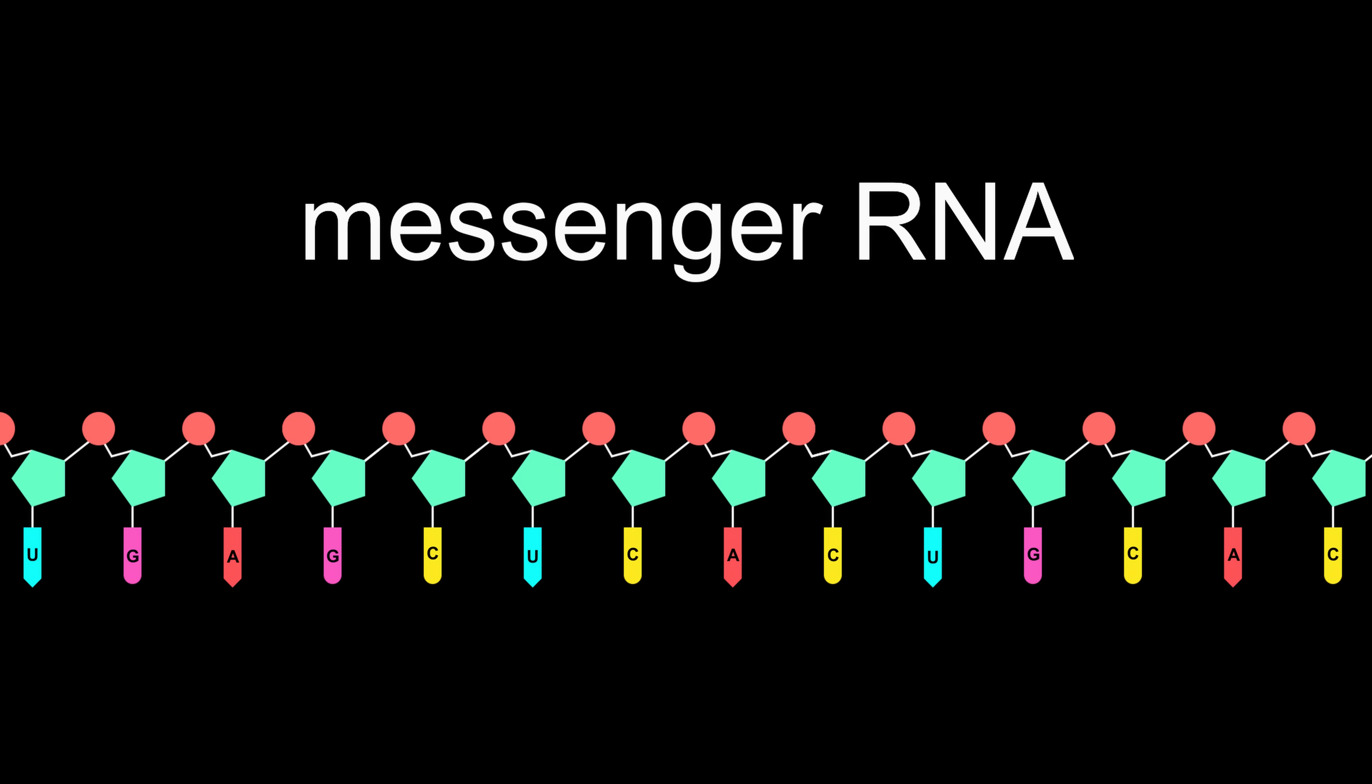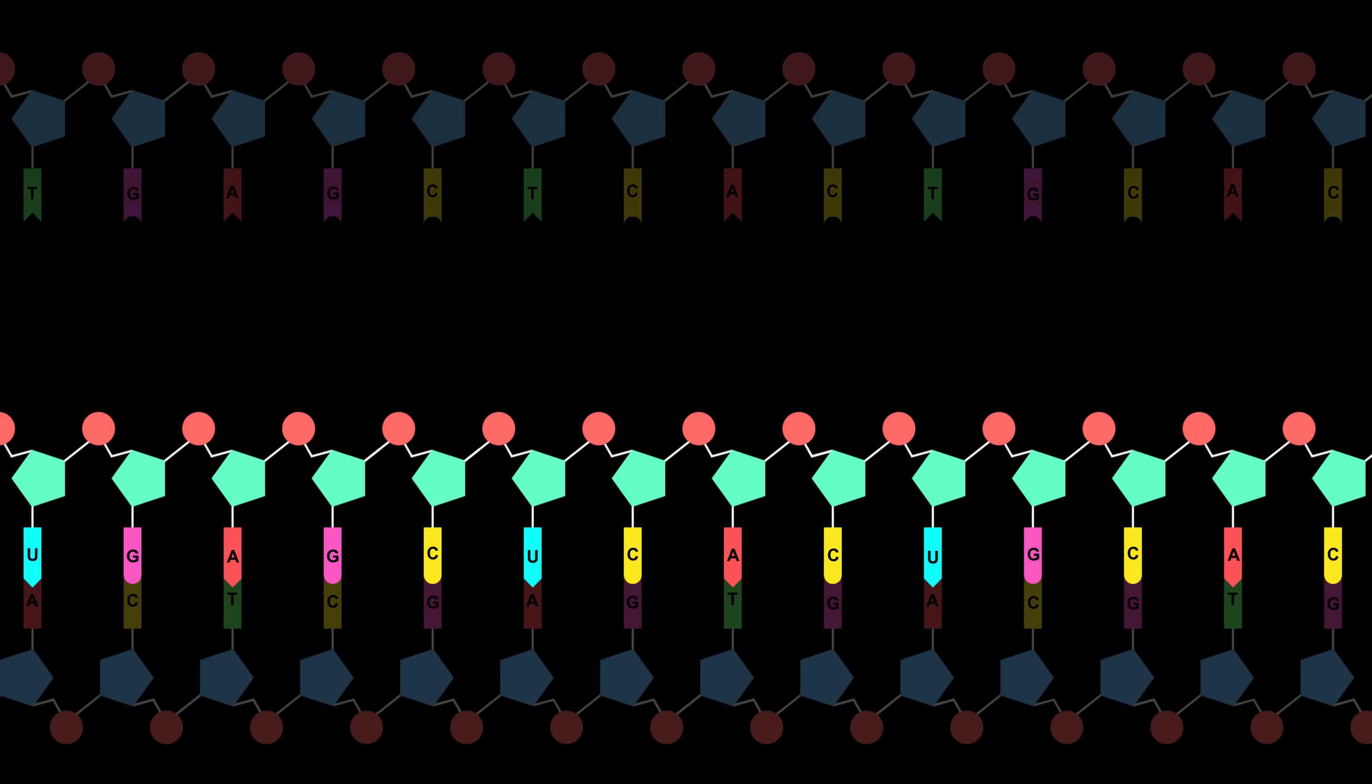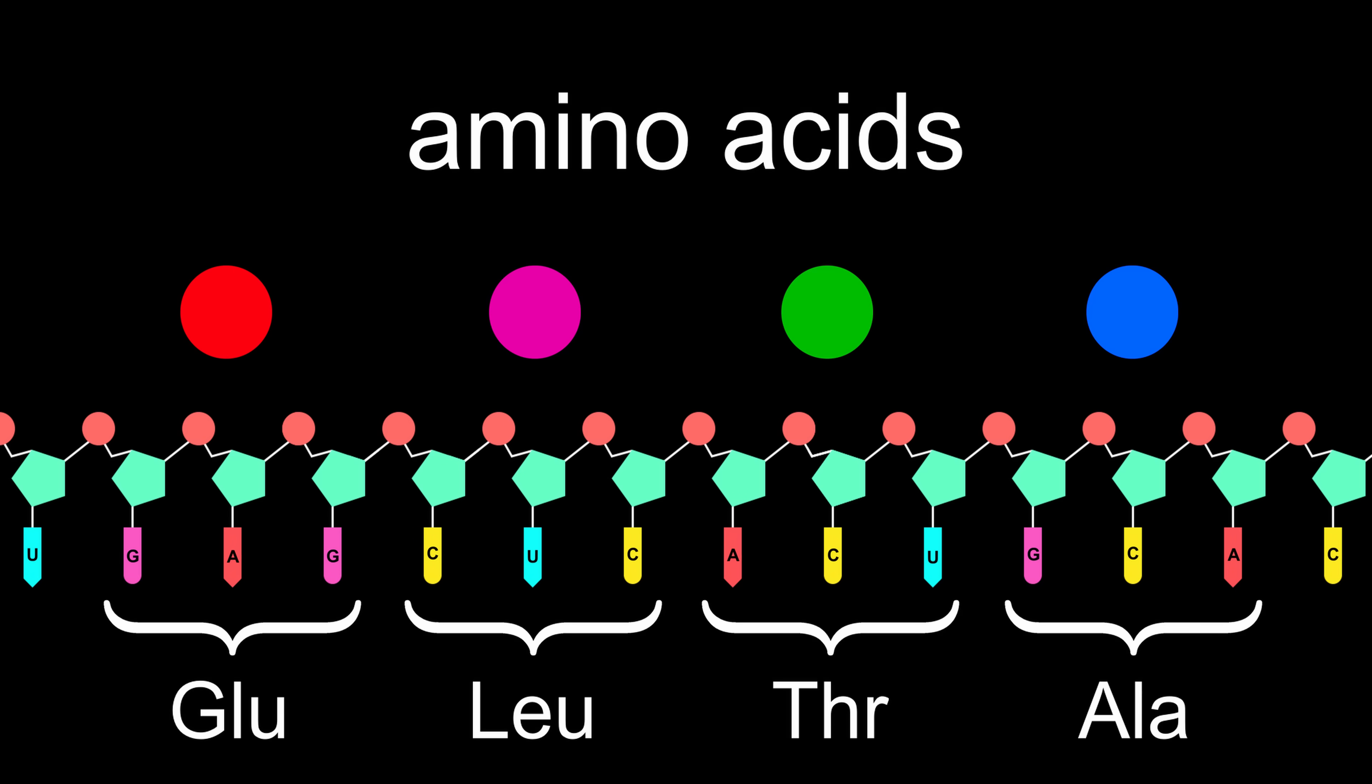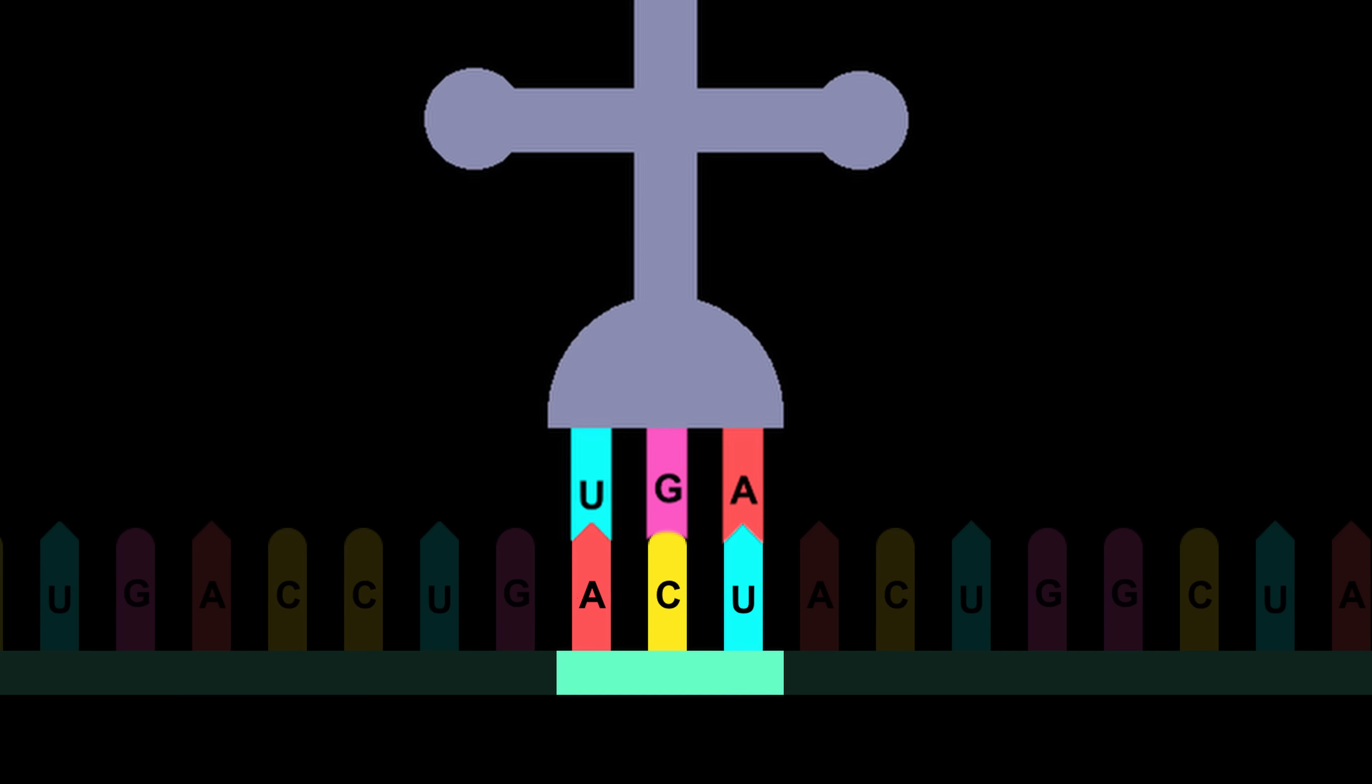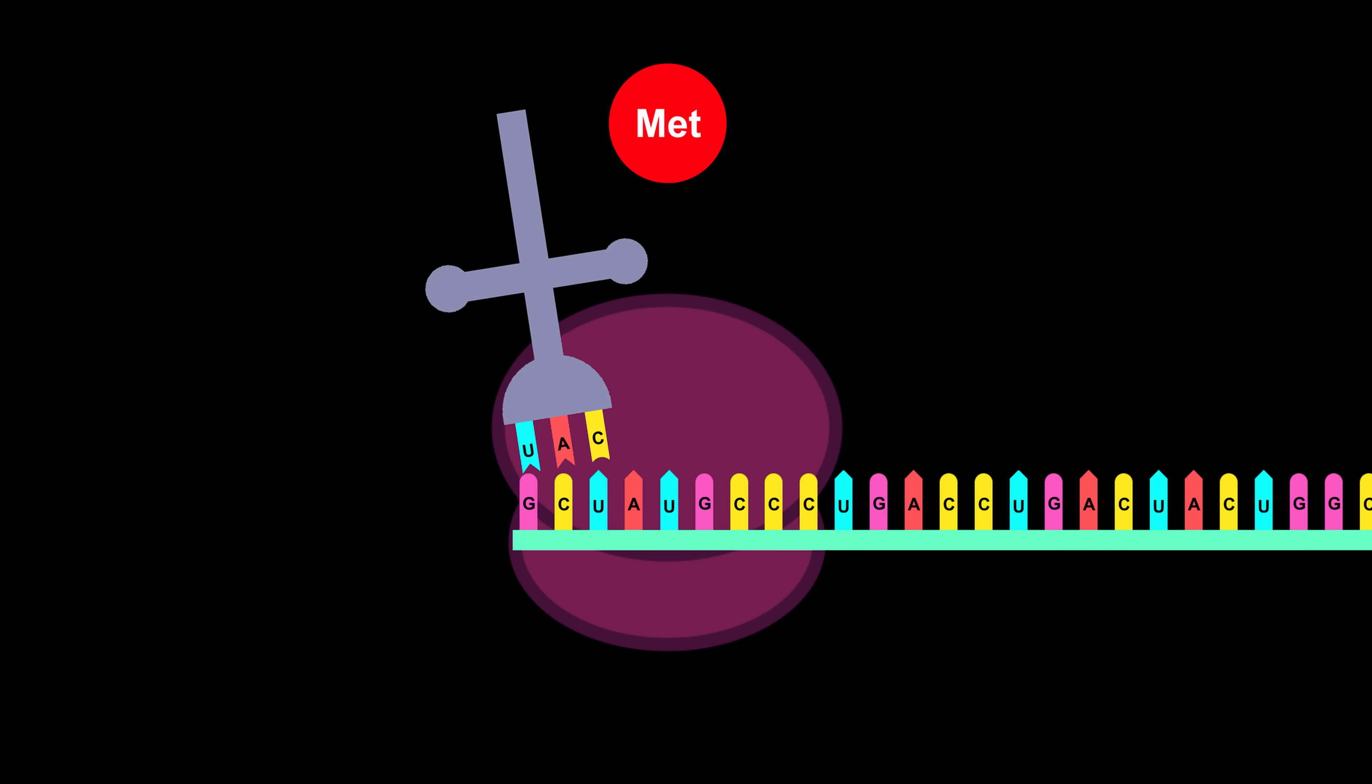The new strand is called messenger RNA or mRNA because it carries this message out of the nucleus to a ribosome. Remember how I said that a gene is like a recipe for a protein? Well, on the mRNA, which carries the same base sequence as that gene, every group of three bases, which is called a codon, codes for a specific amino acid, which are the building blocks for proteins. These amino acids are carried by special molecules called transfer RNA or tRNA, which have a unique anticodon that can only attach to its matching codon on the mRNA.